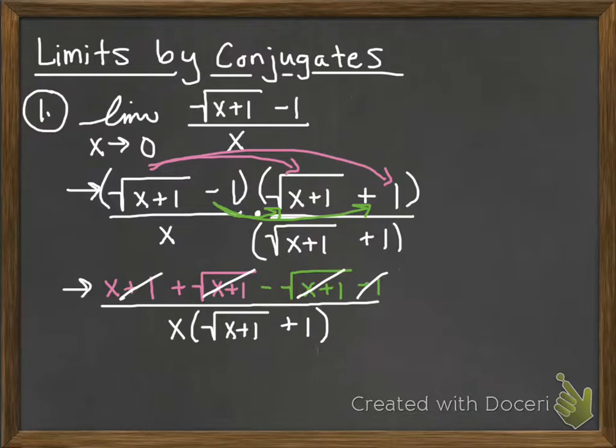All I'm left with is x in the numerator. But notice I have an x here and here after everything else is canceled. Those are going to cancel as well.